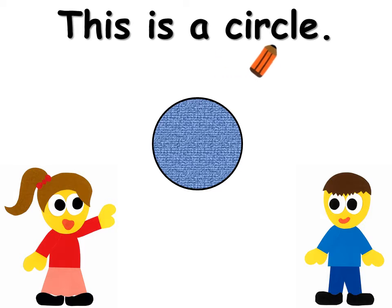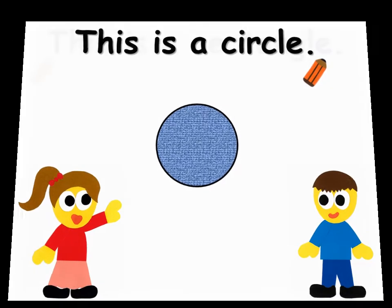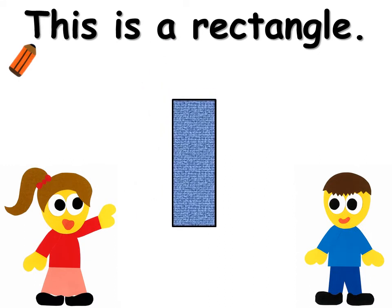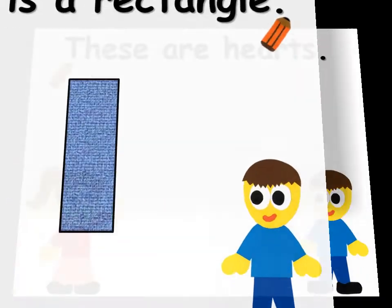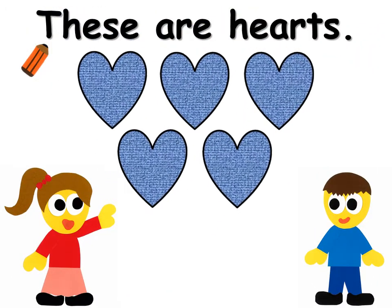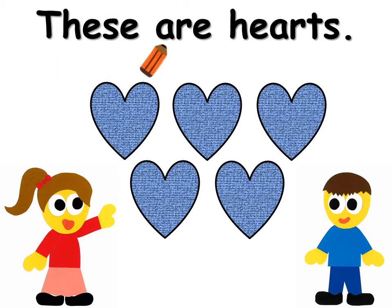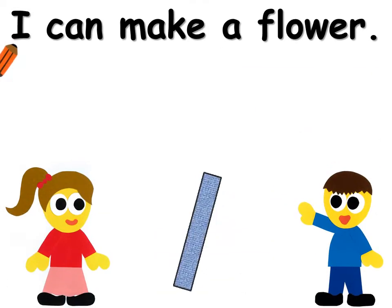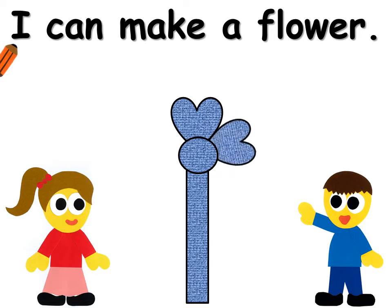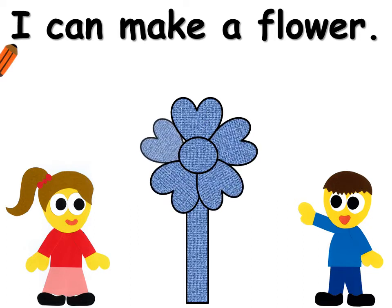This is a circle. This is a rectangle. These are hearts. What can you make with these shapes? I can make a flower.